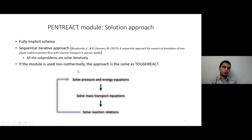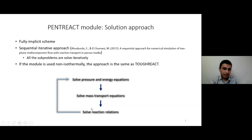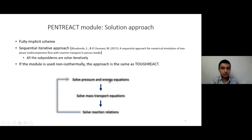The approach I used to solve the reactive transport model is the sequential iterative approach. In this approach, the governing equations are divided into two or three sub-problems: the first sub-problem solves the pressure and energy equations, the second solves the mass transport equations, and the third solves the reaction relations. Because the approach is iterative, after solving the whole system once, it is solved again from the beginning until a convergence criterion is satisfied. For isothermal systems, the energy equation is removed from the first sub-problem; for non-isothermal systems, the approach follows that used in TUF-REACT.